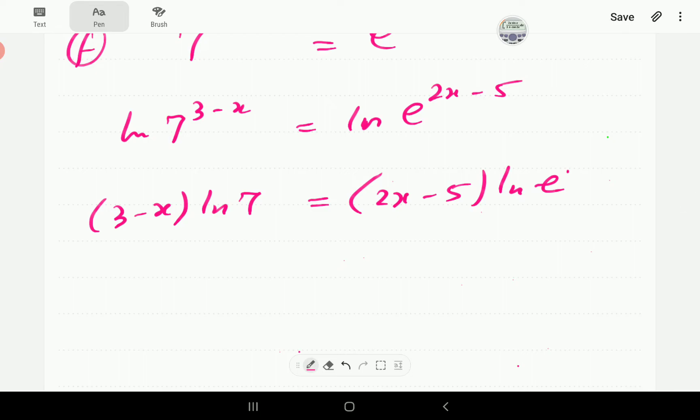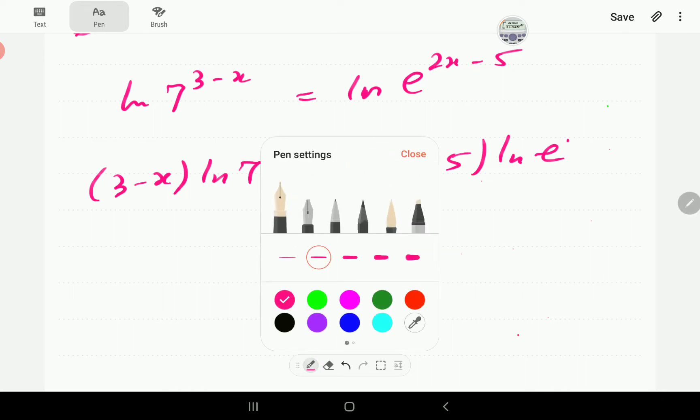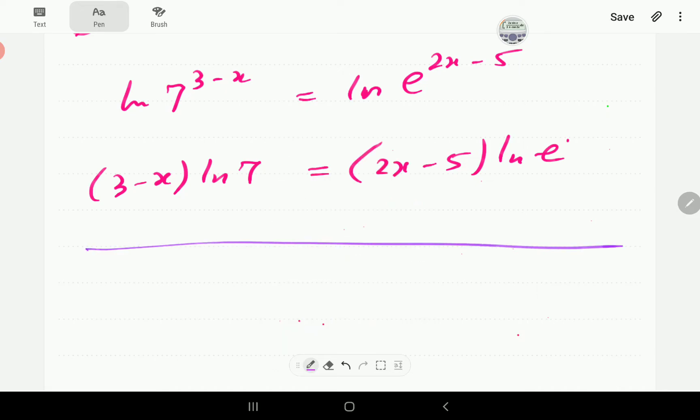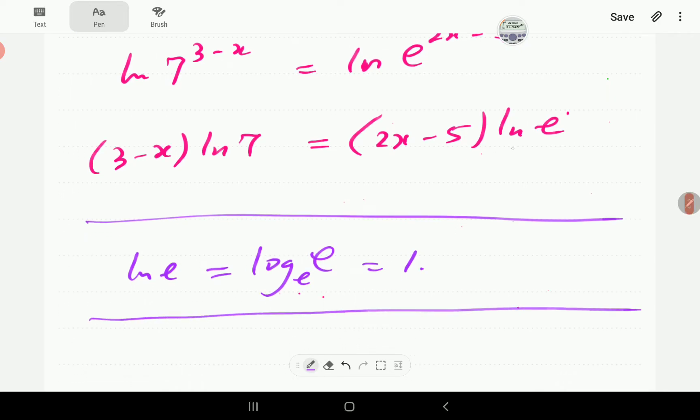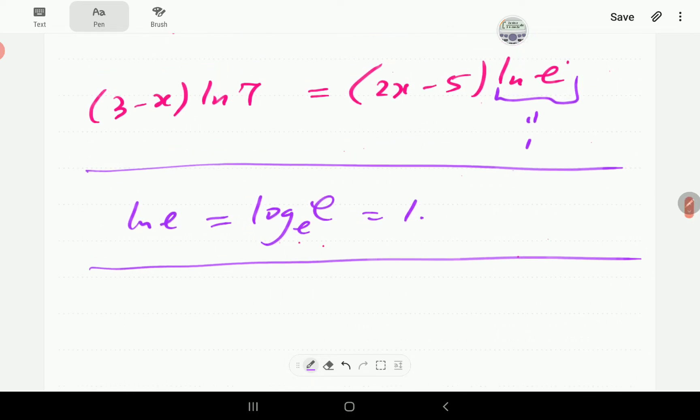Now, here is the reason why we proposed taking ln because e is one of the bases. The reason is because ln e is equals to 1. This is why ln e is equal to 1. So we've got ln e here. Remember that ln is log base e. So this is basically log e base e, which is equal to 1. So that means this bit here is equal to 1. So the right hand side is just 2x minus 5.